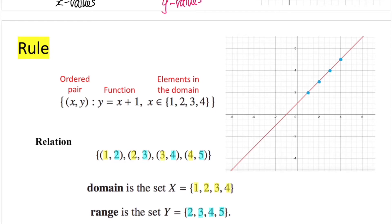In the first part — the ordered pair — we specify the two variables. We are exploring the relationship between x and y, so our ordered pairs use these two variables. Since we use these two variables, our function needs to contain x and y also. Finally, we need to specify the domain for x. The function is y equals x plus 1, and x takes the values 1, 2, 3, and 4 as stated in the question.